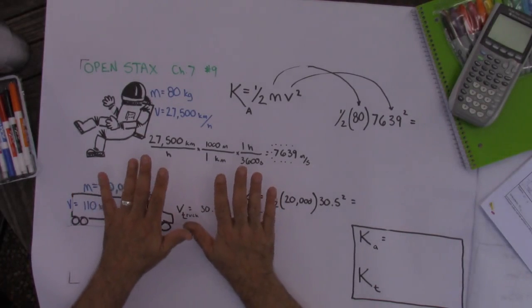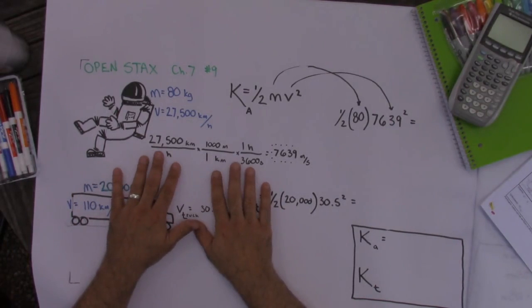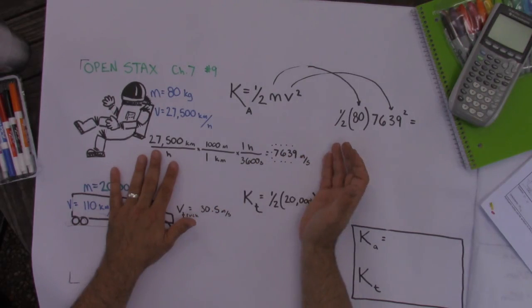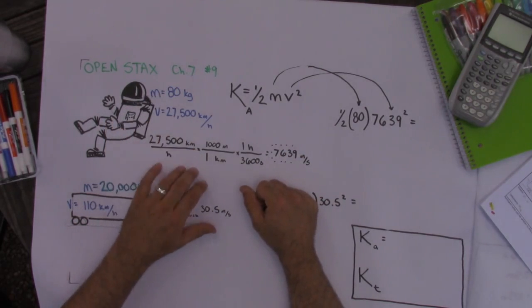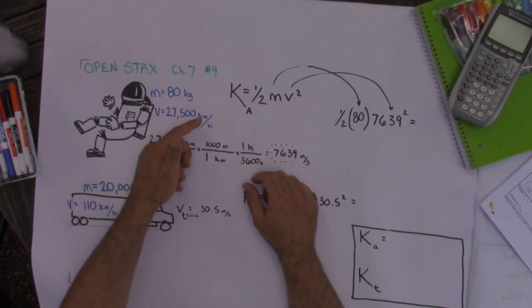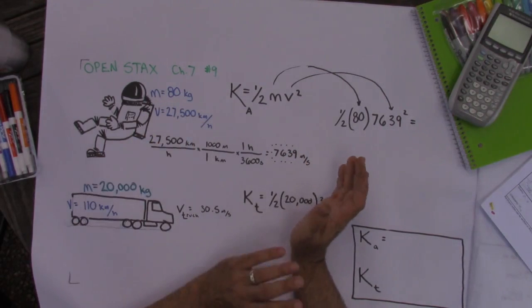So the first thing I set up here for you before we start calculating the kinetic energy is I'm always in the habit of putting everything in meters per second. Now, we don't necessarily have to for this problem. We could just take one half mv squared and compare the two, but I don't know what the units would be. We'd have like kilogram kilometers squared over hours squared. I have no idea what that is. So in order to get this into joules and use it in other places, then we'd have to put everything in meters per second.